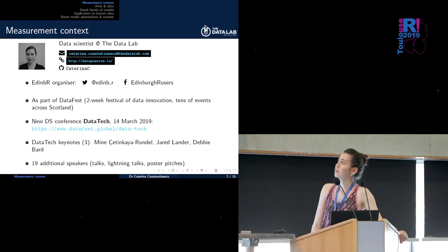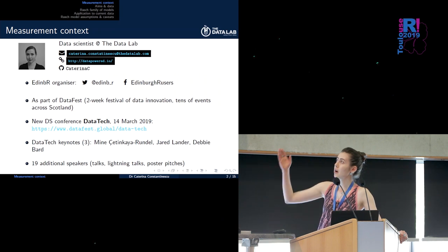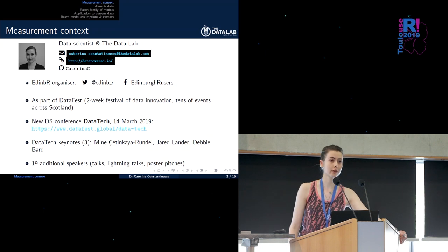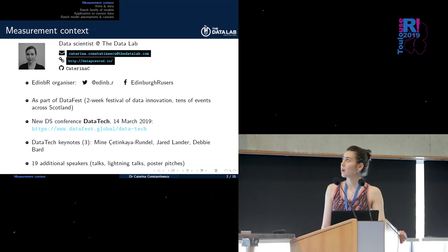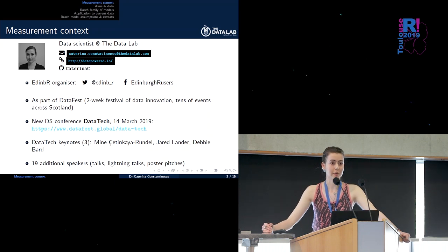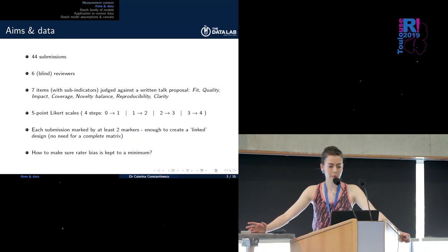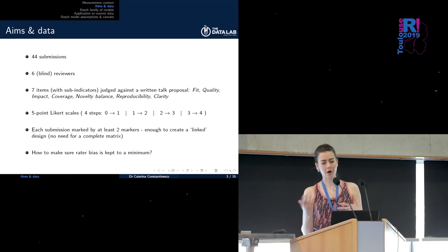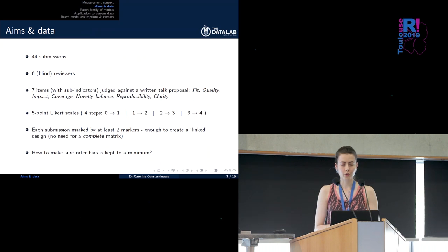And as you can see the conference happened just recently in March and featured three keynotes such as Nina Zakharenko, Jared Lander, Debbie Bard, as well as 19 additional speakers across a variety of formats. We received 44 submissions just to go over the types of data that we received. These were reviewed by six blind reviewers according to seven criteria such as fit with the conference themes, coverage, and so on.